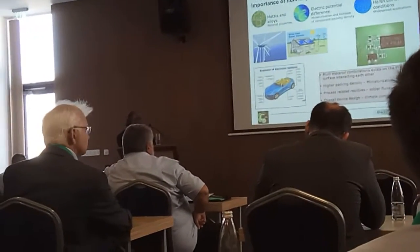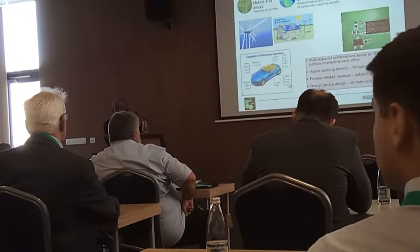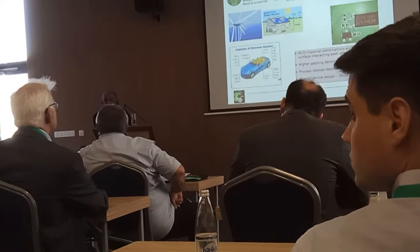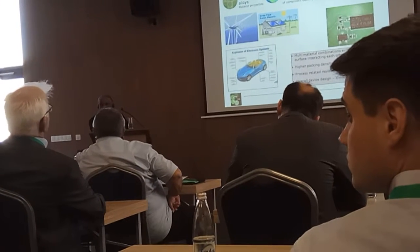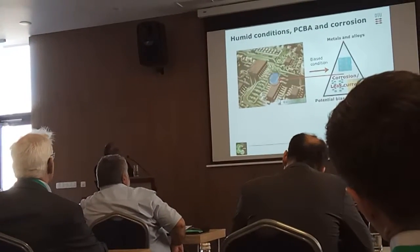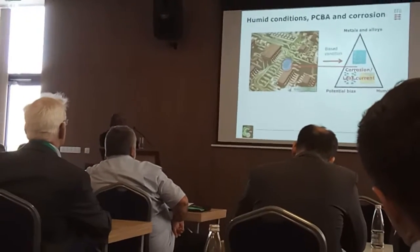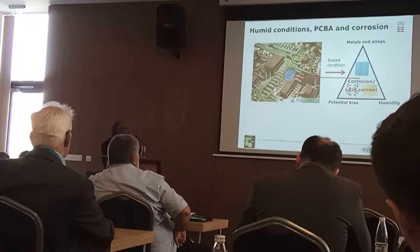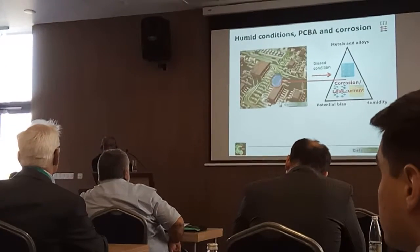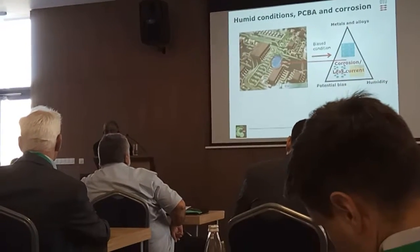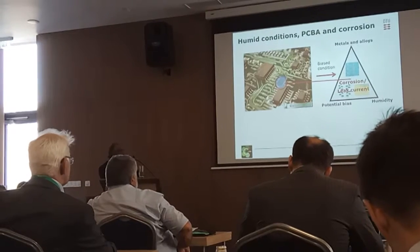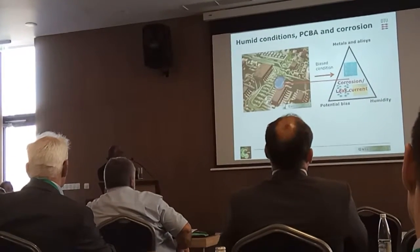The electronics used in automotive systems is increasing, and that is also the case in many other places. From the corrosion point of view, you can see on the circuit board that there are a lot of metals and alloys — all the connection points, all the circuit board is made of metals or alloys. For example, tin or tin alloys — you have a potential bias between the points because the PCB is working, and the humidity creates a water layer formation on the surface.